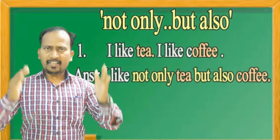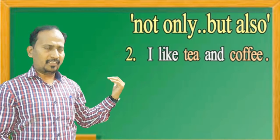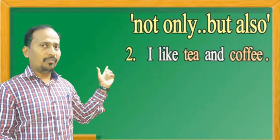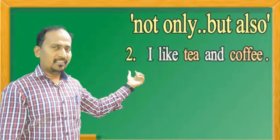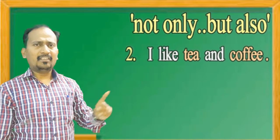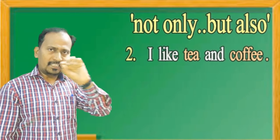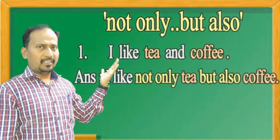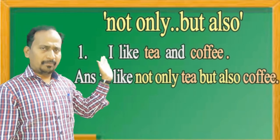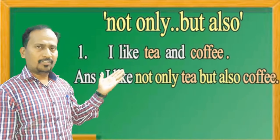Now, if a compound sentence is given instead of two separate ones — for example: 'I like tea and coffee.' When the sentence already has 'and', we remove 'and' and replace it with 'but also'. Then we add 'not only' after the subject or after the main verb. So the answer is: I like not only tea but also coffee.